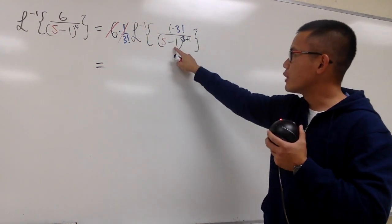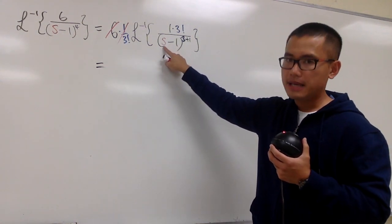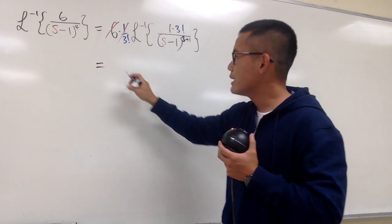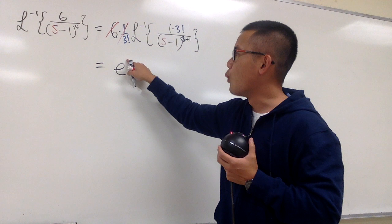First of all, we are subtracting 1 directly toward the s. That means when I go back to the t world, I must multiply by e to the 1t.